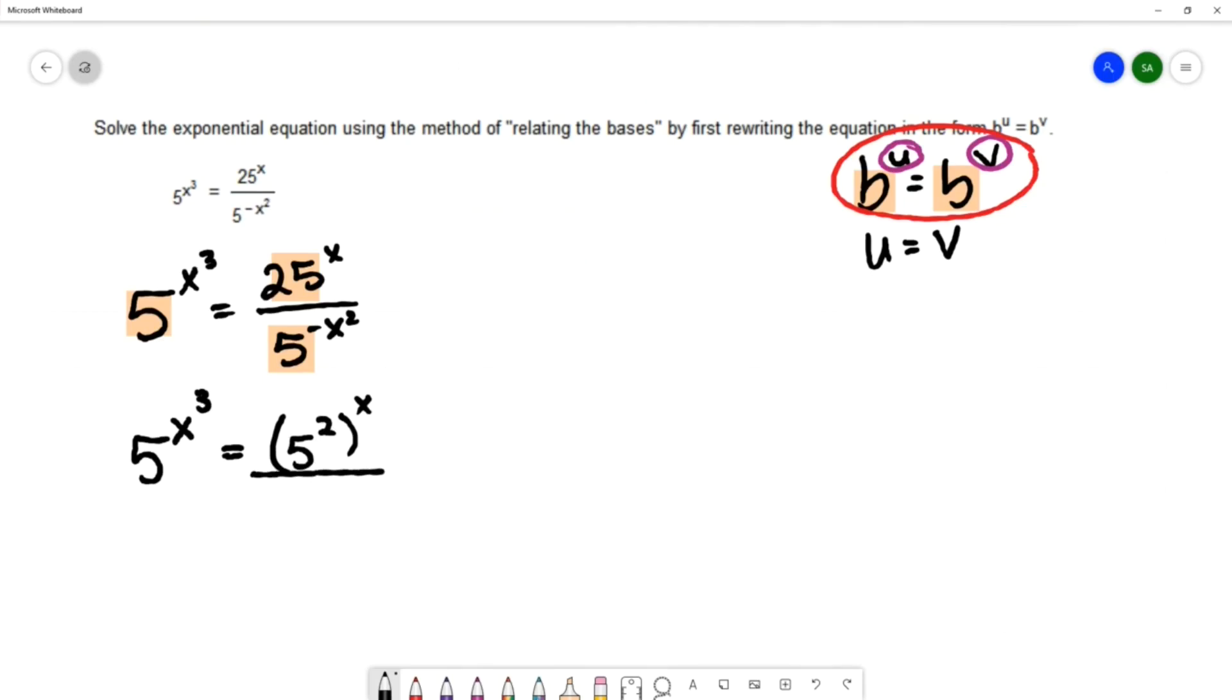That gives me 5 squared to the x over 5 to the negative x squared.